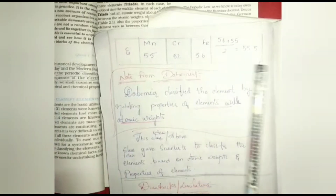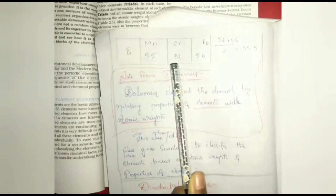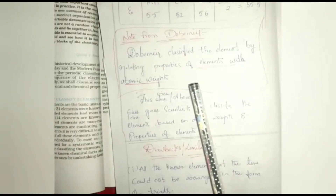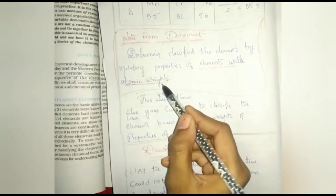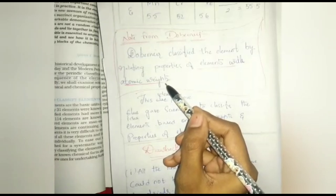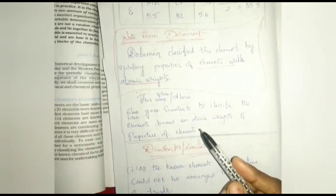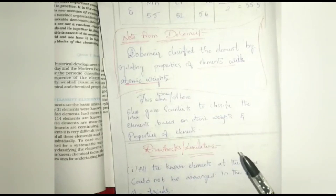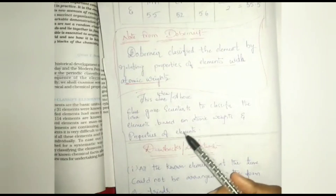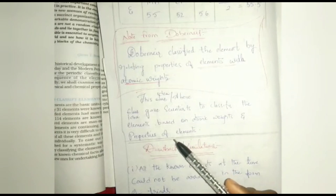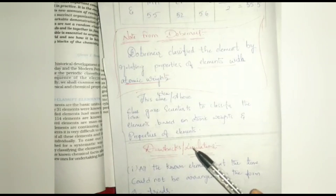Döbereiner classified elements by relating their properties with atomic weights. At that time, atomic weight was the only property known to scientists, so this idea gave scientists a way to classify elements based on atomic weights and properties. This was the success of Döbereiner, though there were also some drawbacks and limitations to his observations.